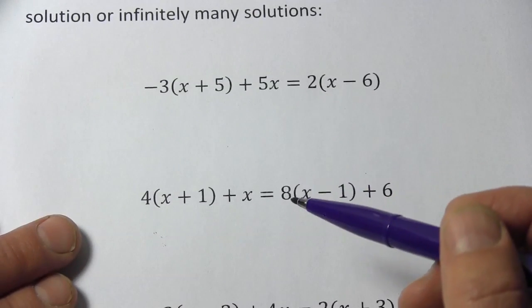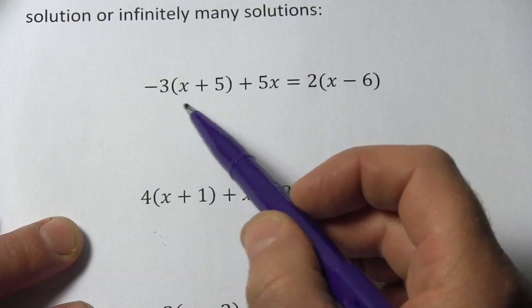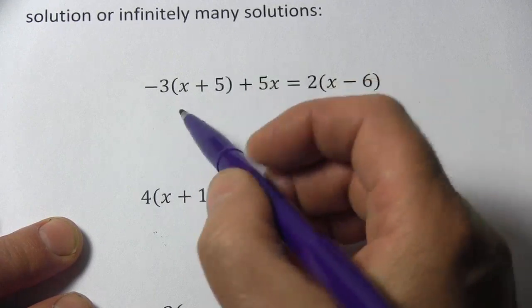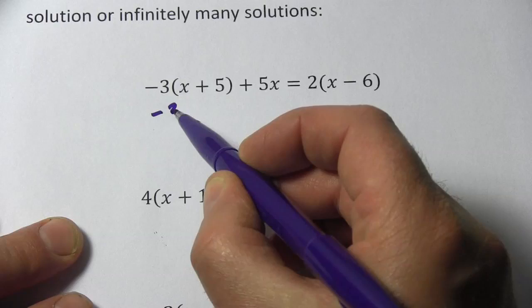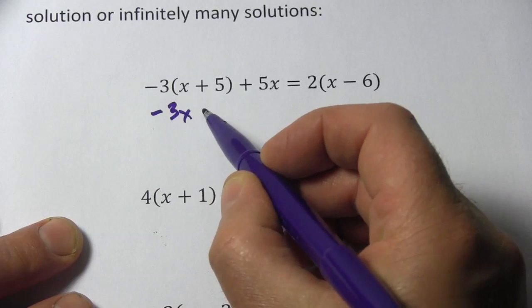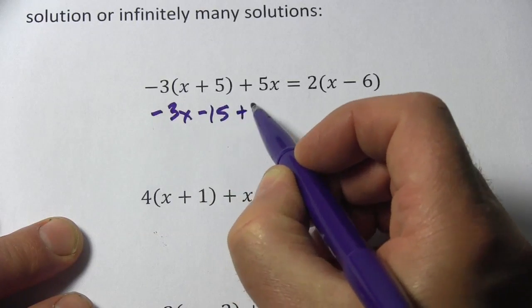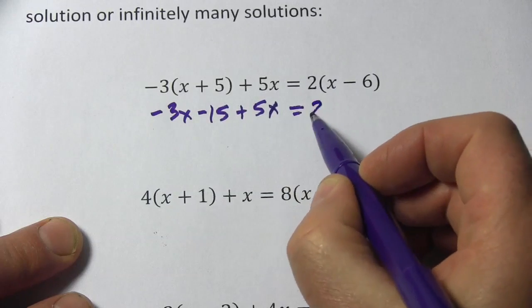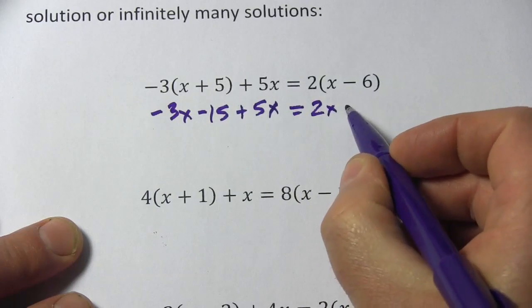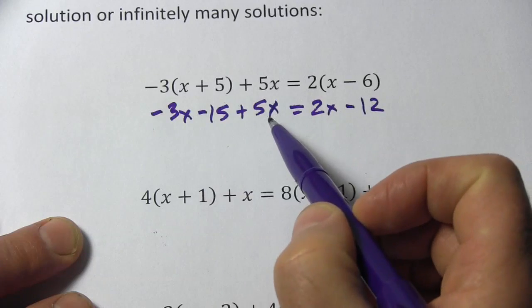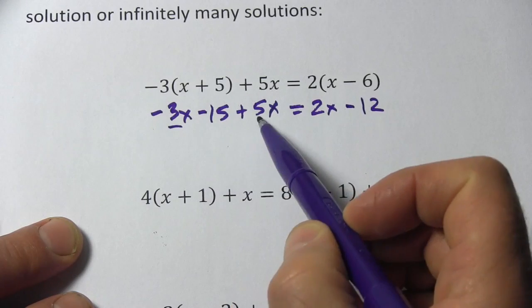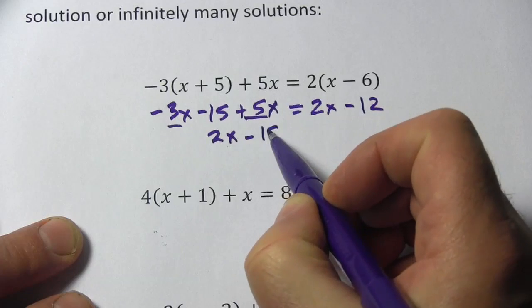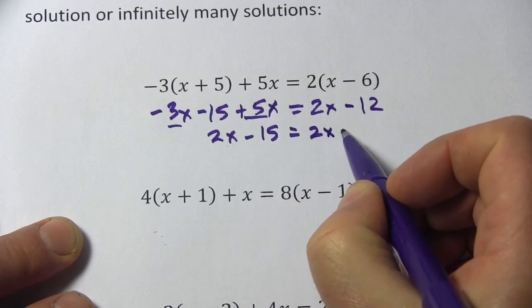Let's take a look at this first one. You can see here we've got this big long equation. It looks like there's some distribution to do, so let's do that first. Negative 3 times x is negative 3x. Negative 3 times 5 is negative 15. Then we have plus 5x equals, and 2 times x is 2x and 2 times negative 6 is minus 12. Now we need to do some combining of like terms. We have a negative 3x and a positive 5x. That comes out to 2x minus 15 equals 2x minus 12.